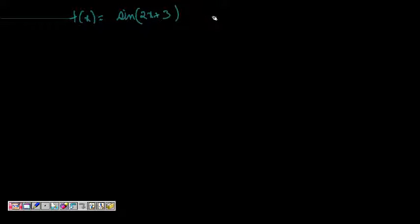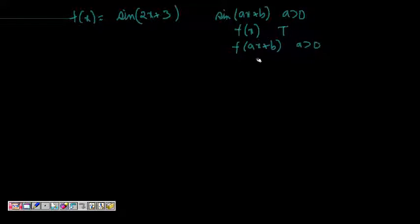So now we know this is of the form sine of ax plus b, where a is greater than 0. And we know that if fx is periodic with period t, then f of ax plus b, where a is greater than 0, is periodic with period t by a.